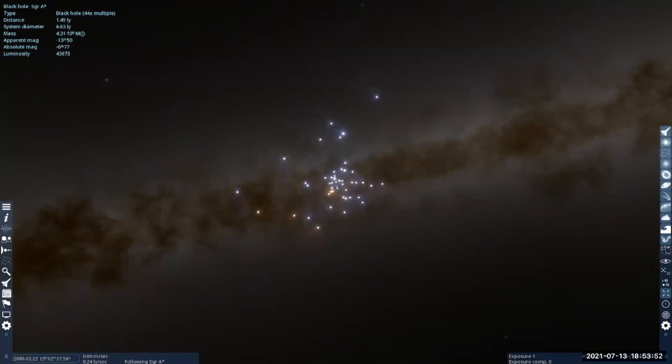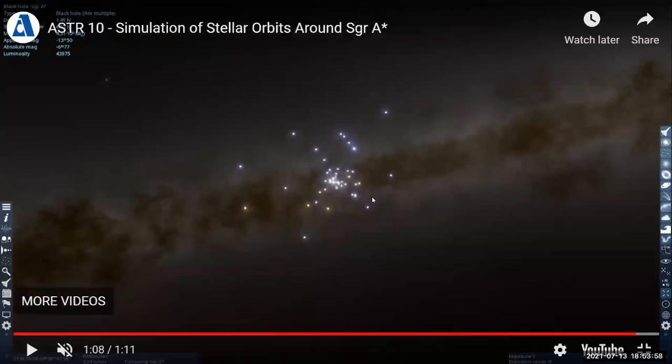Those stars are orbiting the black hole the way our planets orbit the sun. But we see some key differences, like they are not orbiting in a plane the way we are in the solar system.